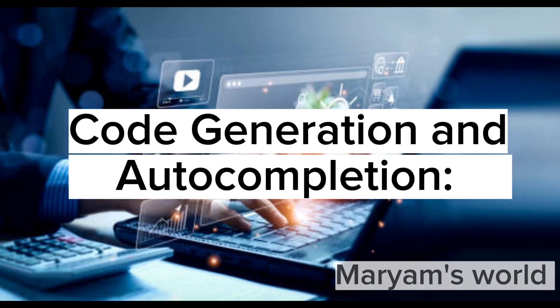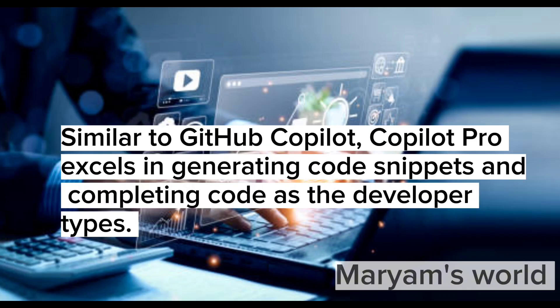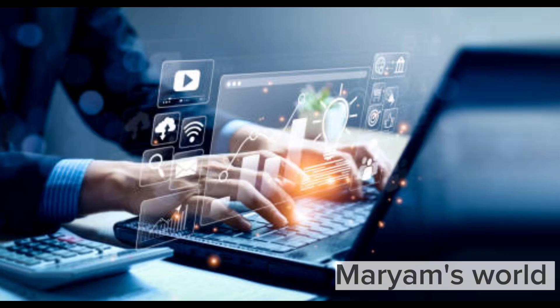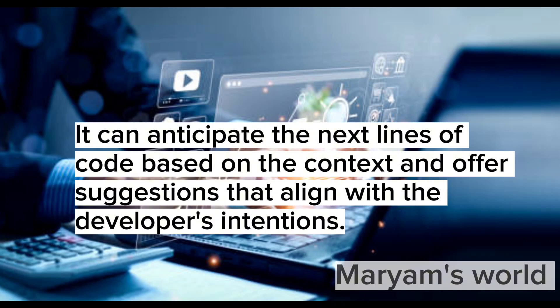Code Generation and Auto-Completion: Similar to GitHub Copilot, Copilot Pro excels in generating code snippets and completing code as the developer types. It can anticipate the next lines of code based on the context and offer suggestions that align with the developer's intentions.